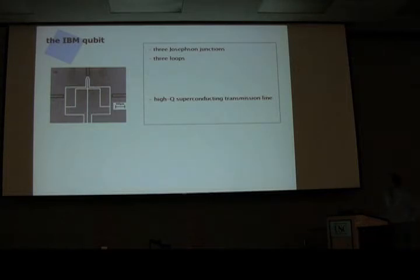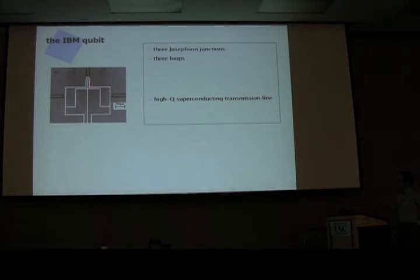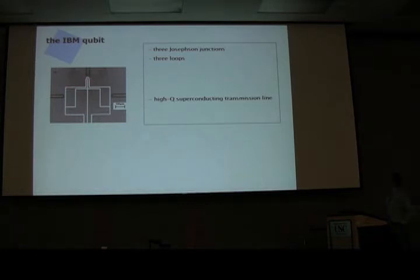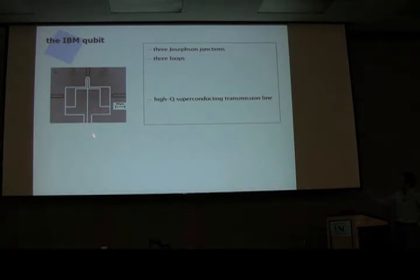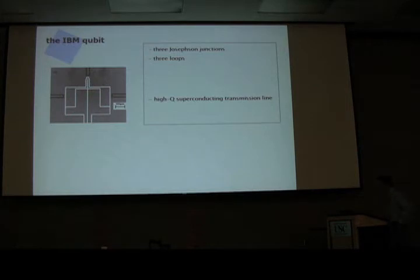Here's a picture of what we call the IBM qubit. It consists of three superconducting loops — one here, one symmetrically located, and then a very small one on top. They are interrupted by three Josephson junctions — the superconducting wire has a very thin gap of insulating material. You can't see them at this scale. On the bottom there is a high-quality superconducting transmission line, open-ended, and you can vary its length to change the frequency of the photon.